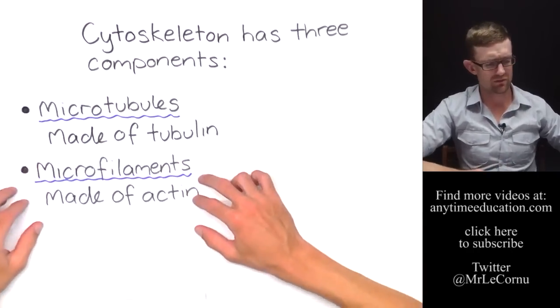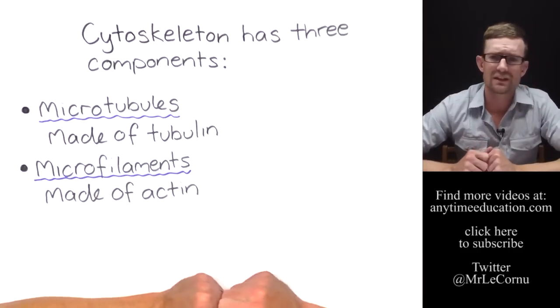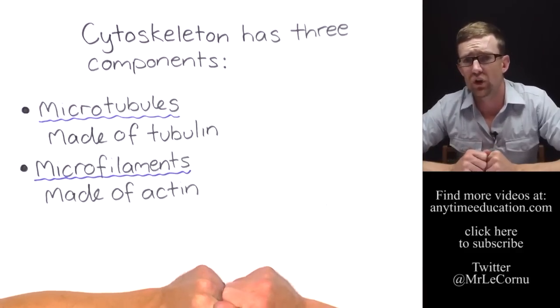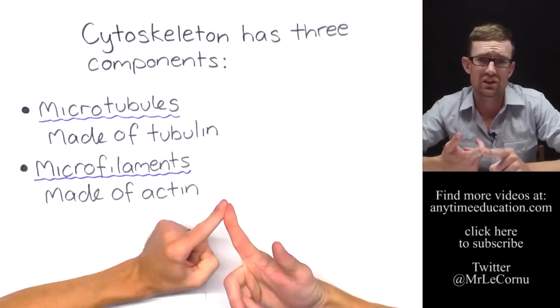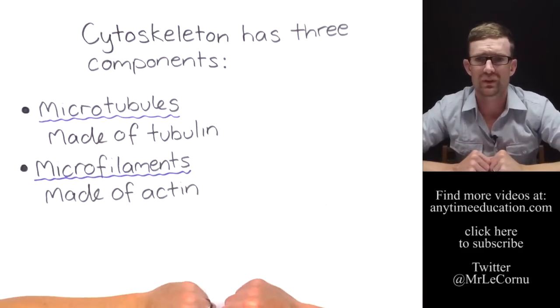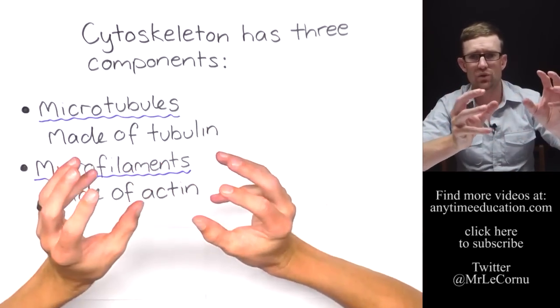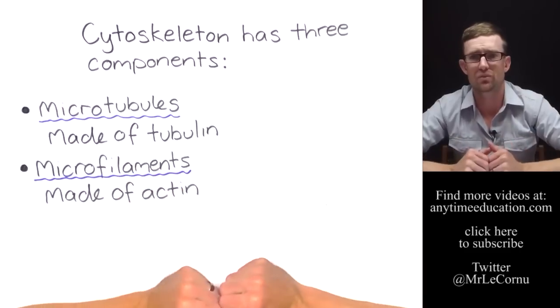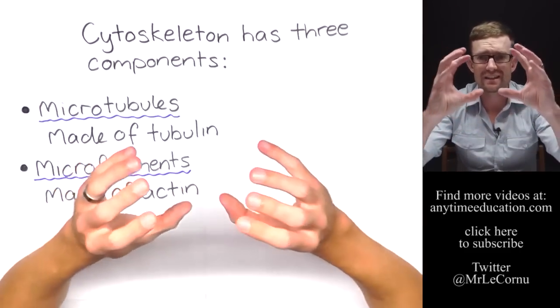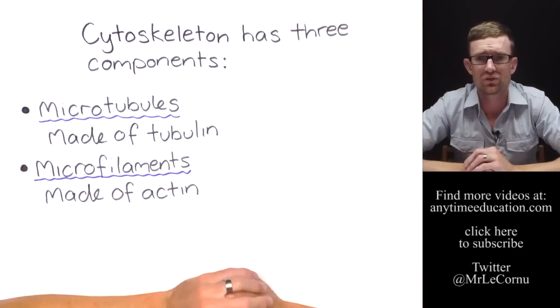Microfilaments, the second type of cytoskeleton component, they're made up of protein subunits called actin. Microfilaments are involved in the cytoplasmic streaming that we talked about, where chloroplasts move around the cell. Chloroplast orientation, where the chloroplasts are held in the right orientation to receive maximum amount of light. Cytokinesis, where the cell cleaves itself into two during cell division.